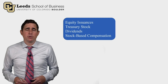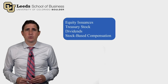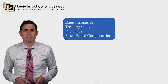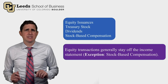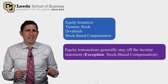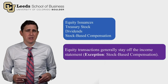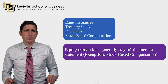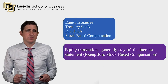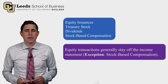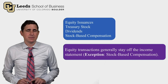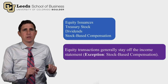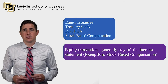To recap, we went through journal entries for four types of equity transactions: equity issuances, treasury stock, dividends, and stock-based compensation. Generally, equity transactions stay off the income statement — gains or losses go straight to the APIC account — because we don't want managers speculating in their own stock. The one exception is stock-based compensation expense, which appears on the income statement so investors know they are being diluted when ownership is given to employees.